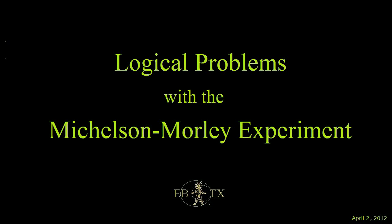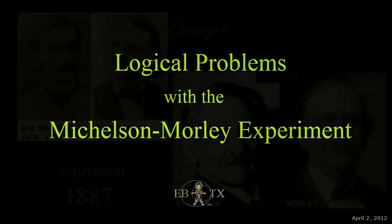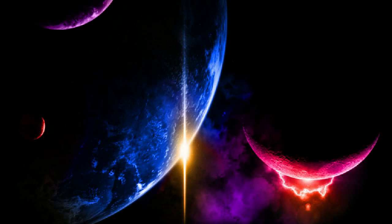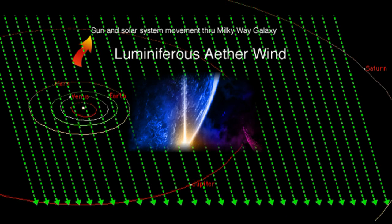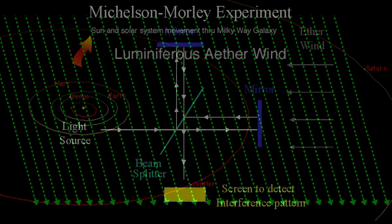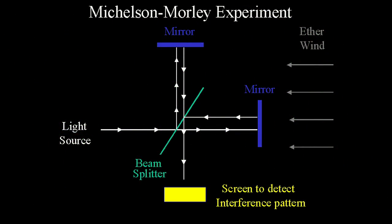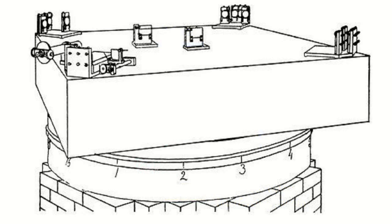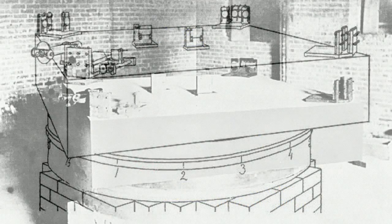One of the cornerstones of special relativity is the Michelson-Morley experiment of 1887, designed to measure the movement of the earth through the luminiferous aether, or movement of the earth relative to an absolute reference frame. Unfortunately, their experiment, and all those conceptually similar to it which followed in later decades, were, one and all, logically flawed.